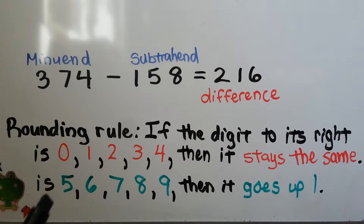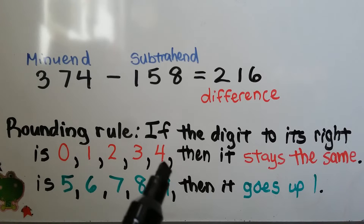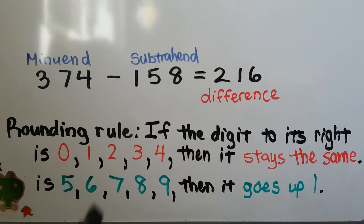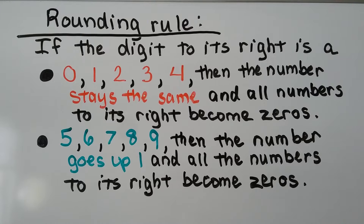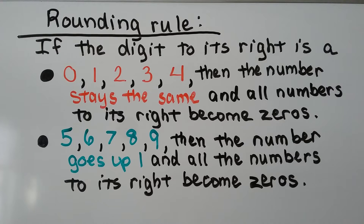If the digit to its right is a 0, 1, 2, 3, or 4, then it stays the same. The digit to its right tells it what to do. If it's a 5, 6, 7, 8, or 9, then that digit to its right tells that place value we're rounding to go up 1, and then they become zeros. So one more time: if the digit to its right is a 0, 1, 2, 3, or 4, then the number stays the same and all the numbers to its right become zeros. If the digit to its right is a 5, 6, 7, 8, or 9, then the number goes up 1 and all the numbers to its right become zeros.